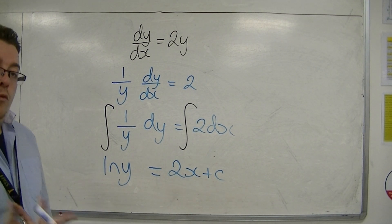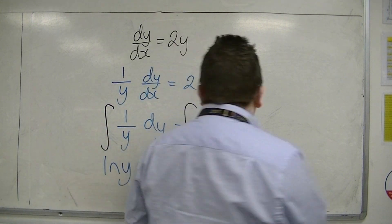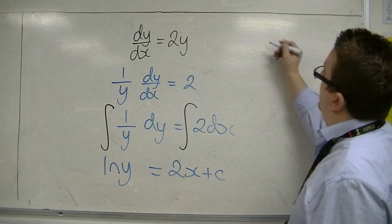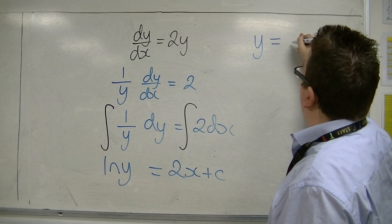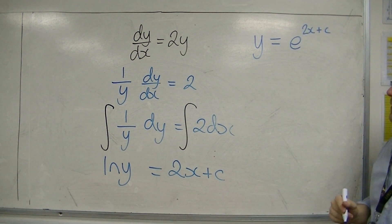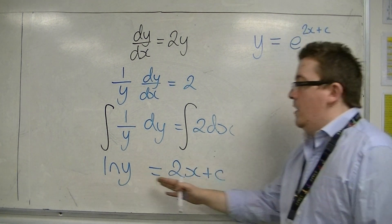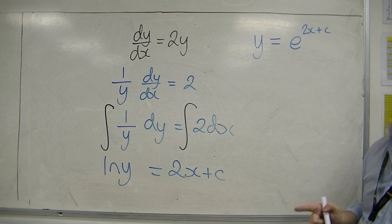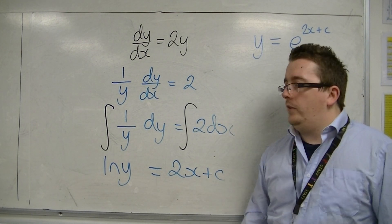Now, I want to get y equals, so I'm going to now write that as y is equal to e to the 2x plus c. Okay, so I've reverted from logarithmic notation to exponential notation here. Or I've e'd both sides.